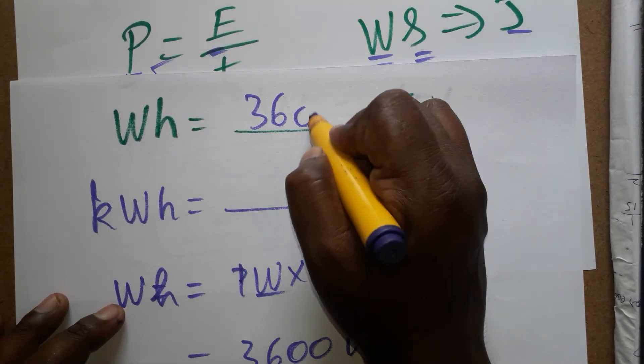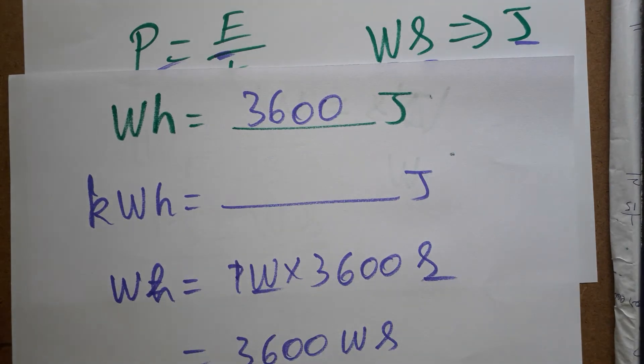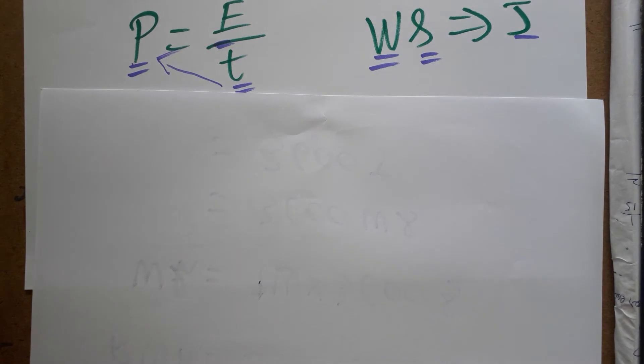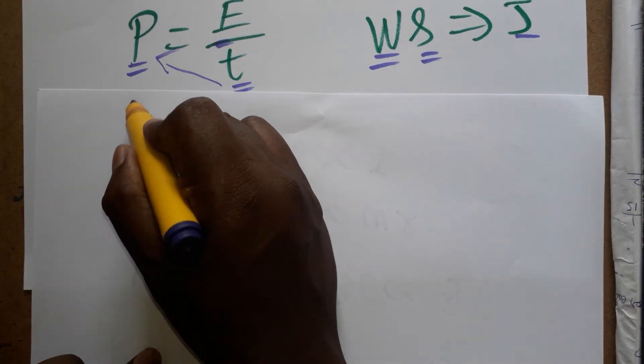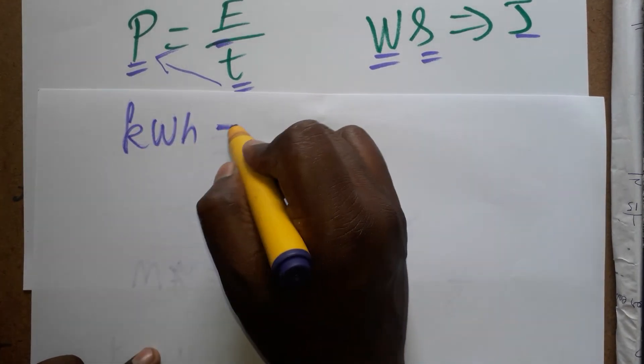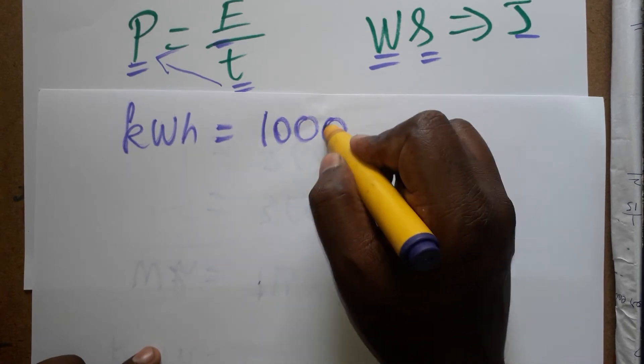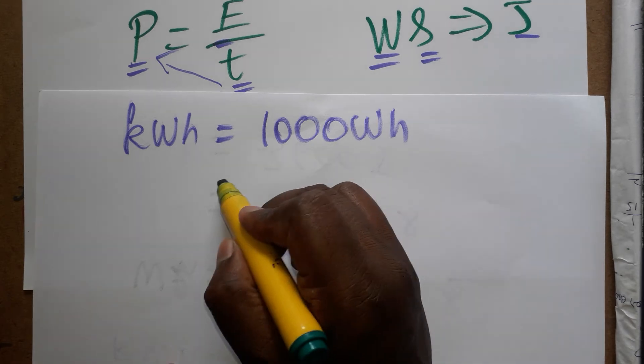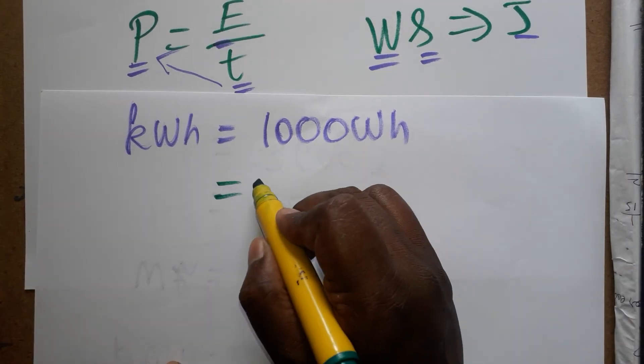Now kWh is equal to dash joule. The another question, one kWh is equal to dash joule. So one kWh, kilowatt hour, so one kWh, kilowatt is thousand watt hour. So thousand watt hour, one watt hour is equal to dash joules, so one watt hour already we found is 3600 joules.